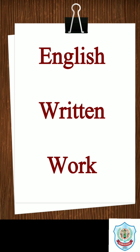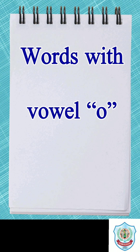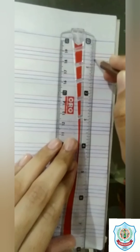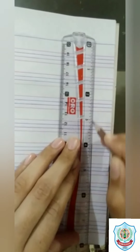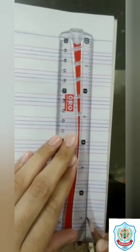How's it going students? Today in English written work we will do words with vowel O. We will write some words having the sound of vowel O. Now students, open your English notebooks and draw a margin line by using a scale like this. Now let's start with me.